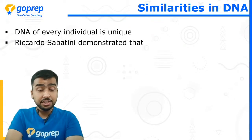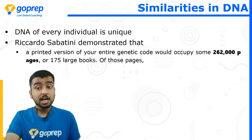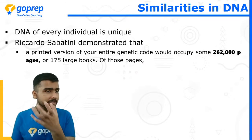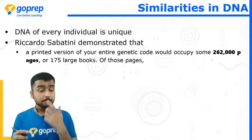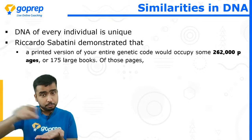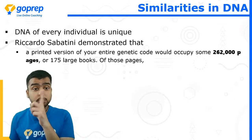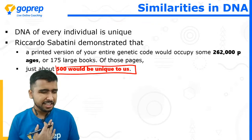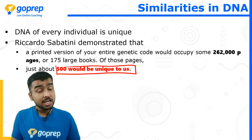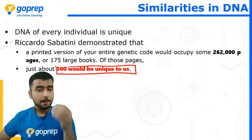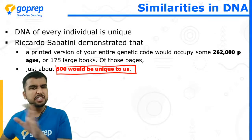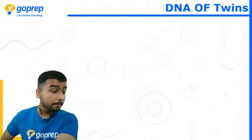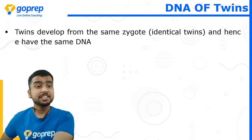DNA of every individual is unique. As Ricardo Savatini noted, if you wrote out all the information in one cell's DNA as a book, it would be 2,62,000 pages long. Of those pages, just 500 pages would be unique to the human race compared to other species. If you compare your DNA to your sibling's, you'd have just 500 unique pages out of 2,62,000 — but in twins, the DNA is almost the same.